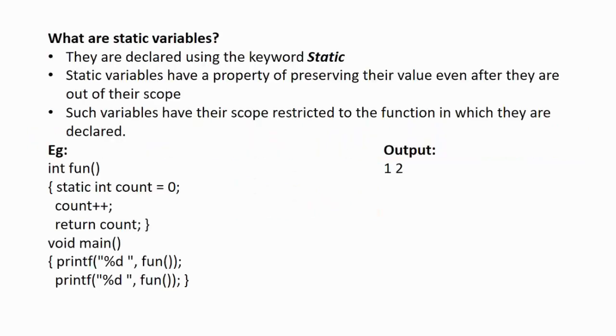First question is, what are static variables? The variables that are declared using the keyword static are known as static variables. They have a property of preserving their value even after they are out of their scope. Such variables have their scope restricted to the function in which they are declared.